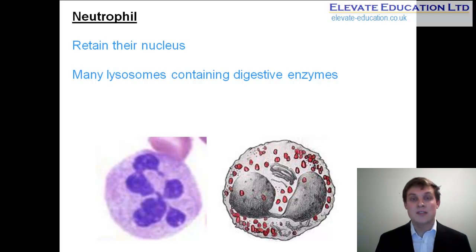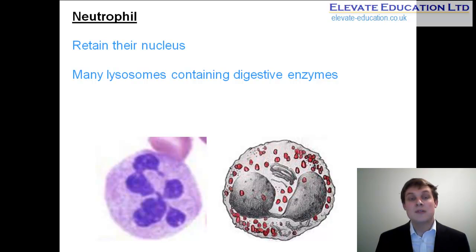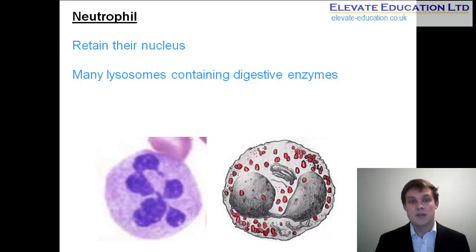The reason the neutrophil retains its nucleus is that the nucleus contains the cell's DNA, which is required to be transcribed in order to build the proteins that are the enzymes contained within the lysosomes. If there was no DNA present within the cell, the enzymatic proteins would not be produced.